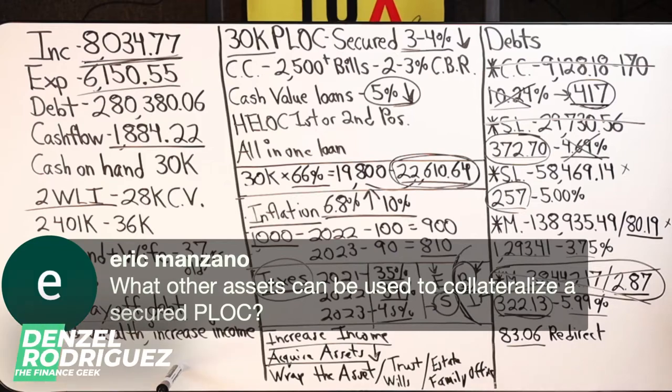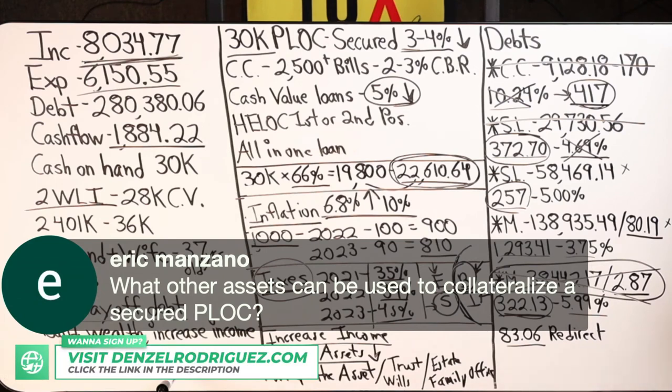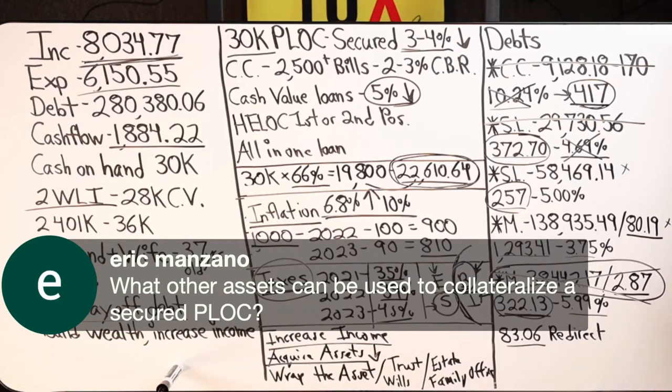Eric says, what other assets can be used to collateralize a secured personal line of credit? I would assume a car, anything of value - gold, silver. That'd be my first assumption. If I have a relationship with a bank and I tell them I've got eight ounces of gold, ten thousand dollars worth of silver and gold...